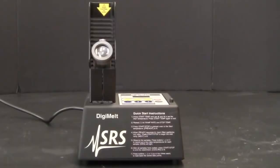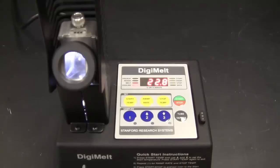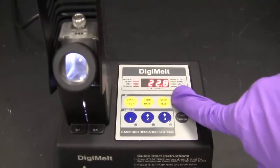The Digimelt operation instructions can also be found on the front of the machine. Have your lab record ready, then start the Digimelt.